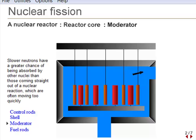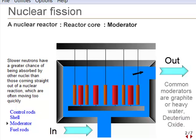The moderator is a substance that fills the reactor core and surrounds the fuel and control rods. Ideally, it is a substance that will not absorb neutrons, but instead slows them down. Common moderators include graphite and heavy water.